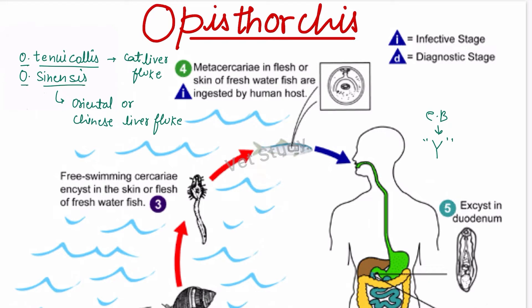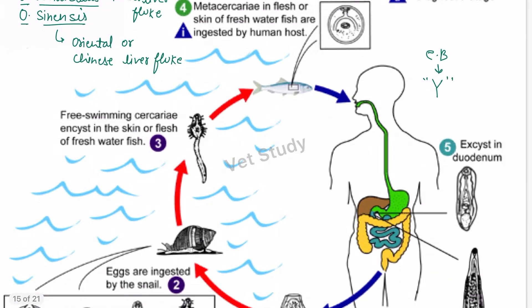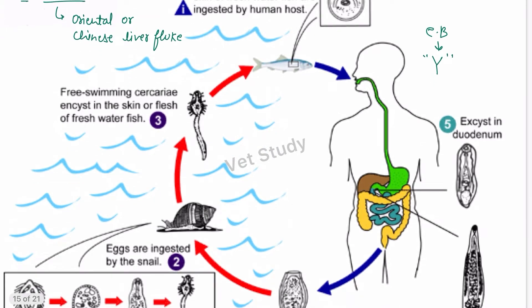Regarding epidemiology, only fish-eating animals including humans suffer from this parasite, because fish play an important role in the life cycle. The eggs are small, light brown in color, and operculated. The first intermediate host (snail) is Bithynia, and the second intermediate host is fish.